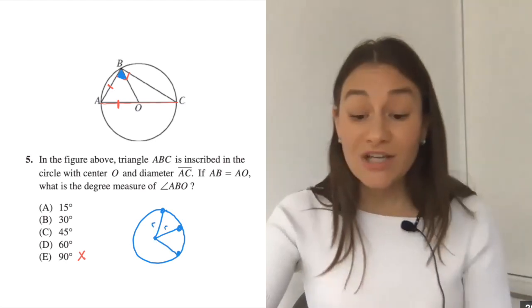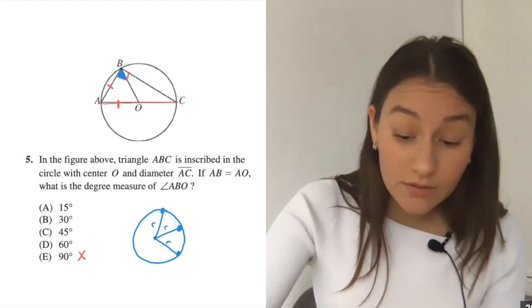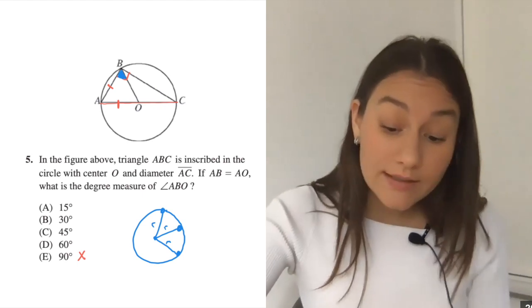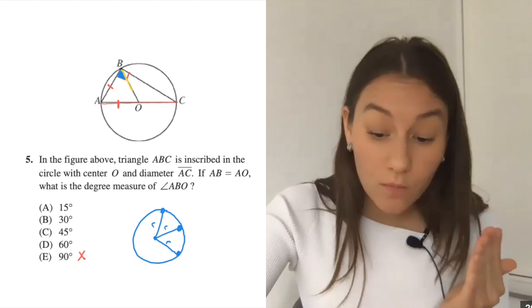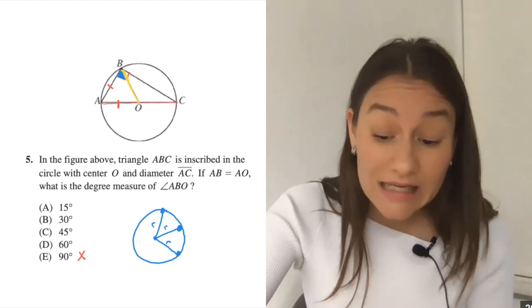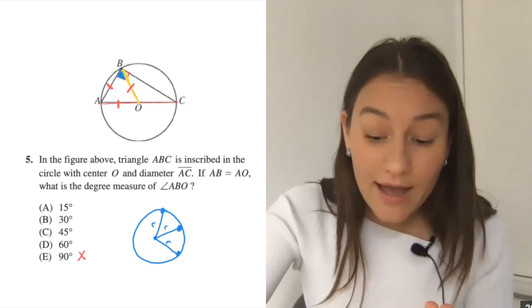So your radius could look like this, it could look like this, it could look like this. So what I notice here is that AO is a radius. I also notice, and we know that AB is equal to AO, they give us that, but I see that BO is actually a radius too. So it's going to be the same as AO. So what do I get? I get a triangle with three sides that are the same.